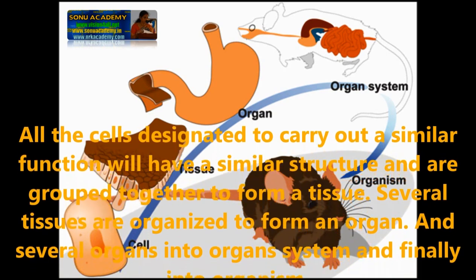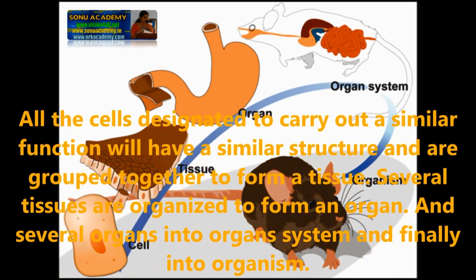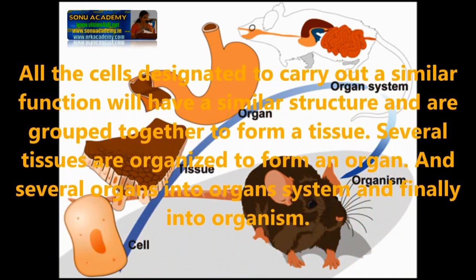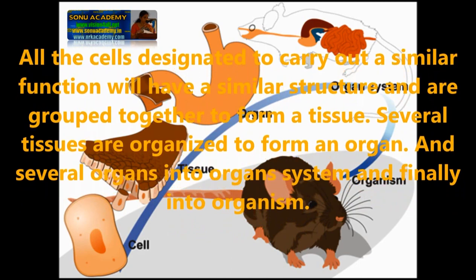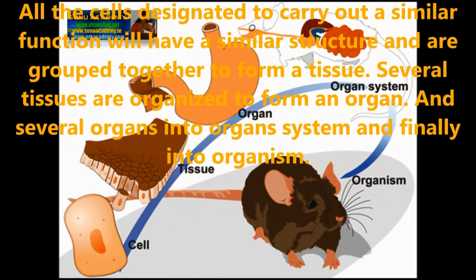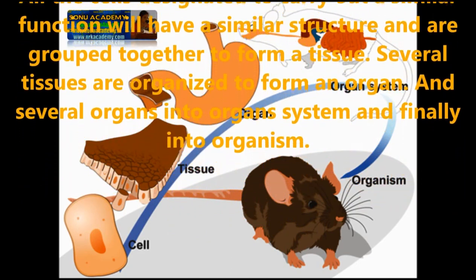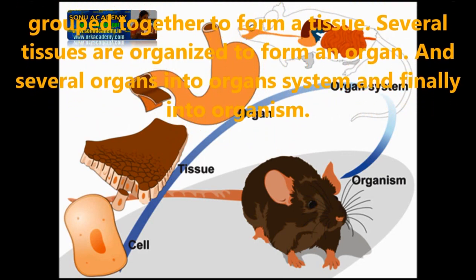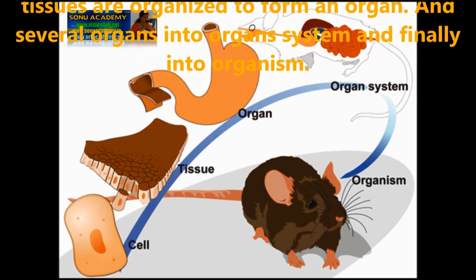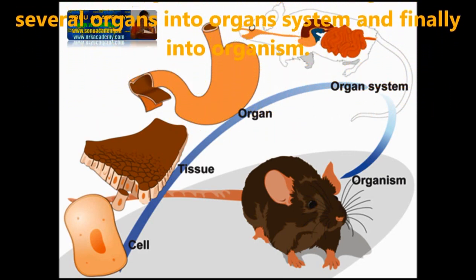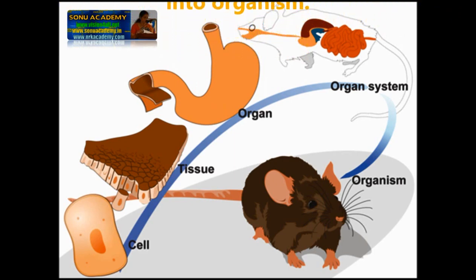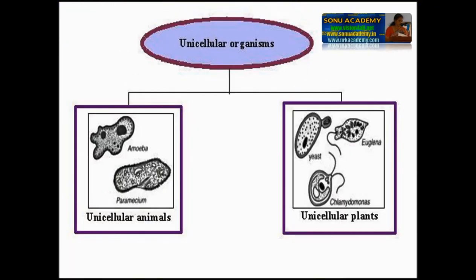Several tissues organize to form an organ, and several organs organize to form an organ system. And finally, it changes into organisms. Let us study how the tissues are organized: cell, cell to tissue, tissue to organs, organs to organ systems, organ system to organisms.